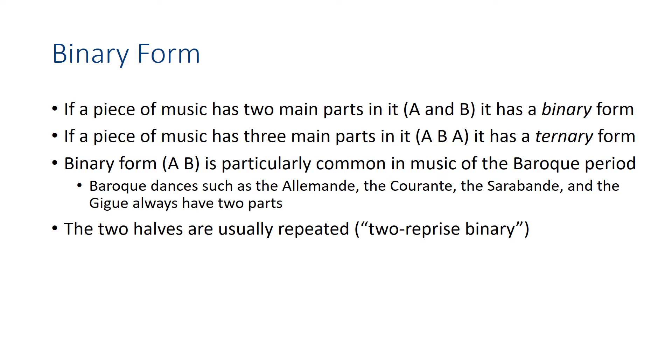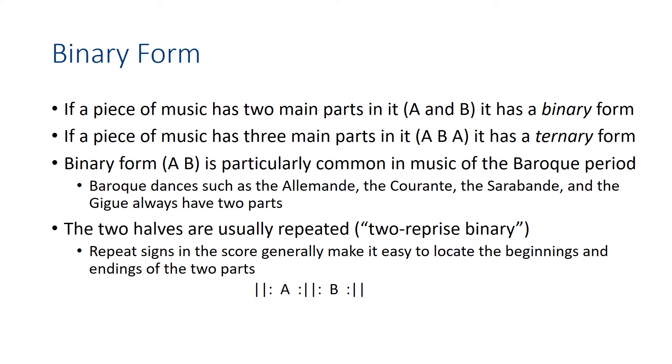And the two halves of binary form are usually repeated, so we can call this two-reprise binary. Those repeat signs in the score will make it fairly easy to find the beginnings of the two parts. So here's a summary of binary form: an A part repeated and a B part repeated.